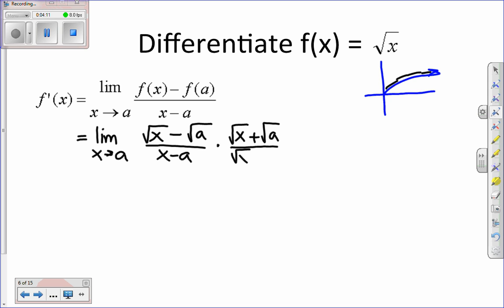Remember, that's one of our options of being able to manipulate the function so the limit, we can find the value of the limit. And if we multiply square root of x minus a times square root of x plus a, we end up with x minus a in the numerator. And then in the denominator, we have x minus a times the quantity, the square root of x plus square root of a.